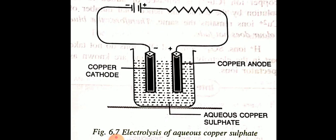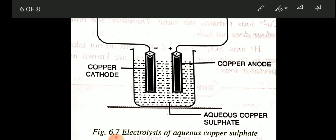Looking at the diagram: we have an electrolytic cell — the apparatus where we carry out electrolysis. The cathode is connected to the negative terminal of the battery and the anode is connected to the positive terminal. Both cathode and anode are made of copper, and the electrolyte used is aqueous copper sulfate solution.